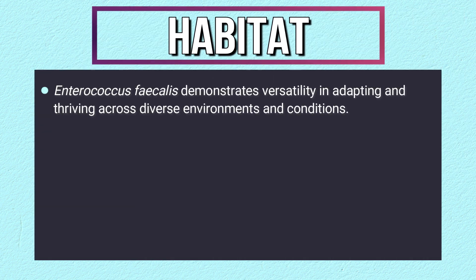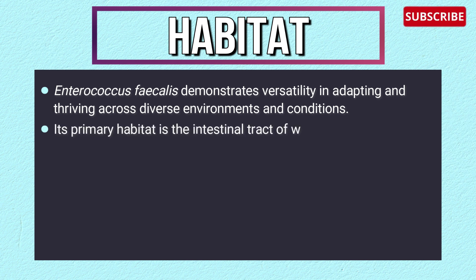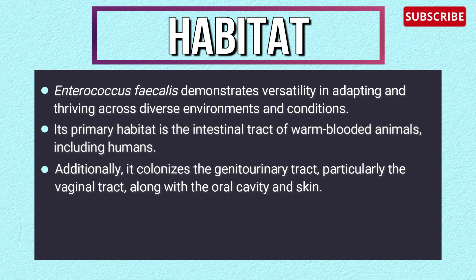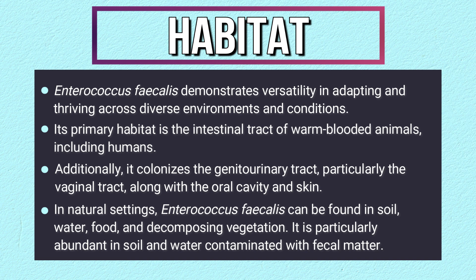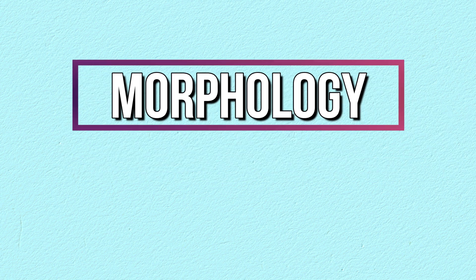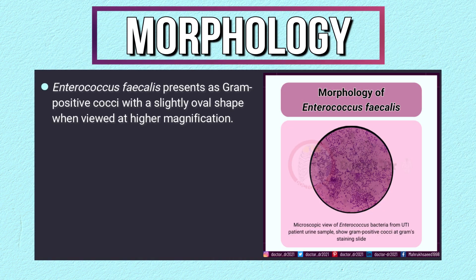Enterococcus faecalis demonstrates versatility in adapting and thriving across diverse environments. Its primary habitat is the intestinal tract of warm-blooded animals including humans. It also colonizes the genital and urinary tract, particularly the vaginal tract, along with the oral cavity and skin. In natural settings, it can be found in soil, water, food, and decomposing vegetation, and is particularly abundant in soil and water contaminated with fecal matter.